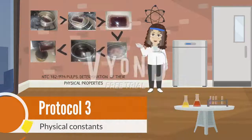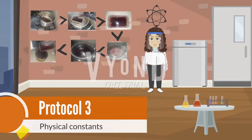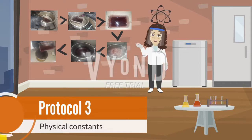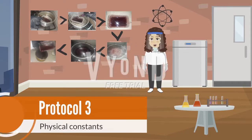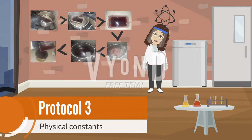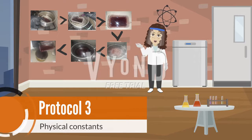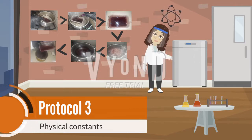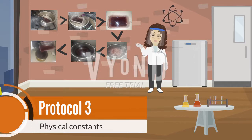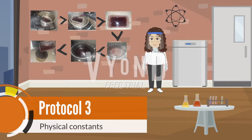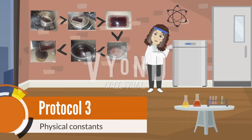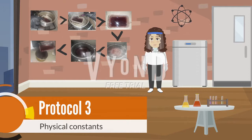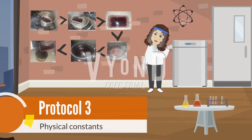Protocol three is physical constants. The melting point is the transition when an element goes from a solid to a liquid state. In this case, the transition occurs after 30 minutes at a temperature of 104.5 degrees, based on NTC 782.